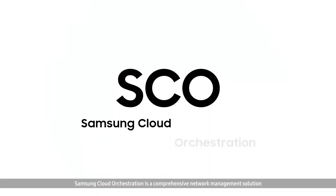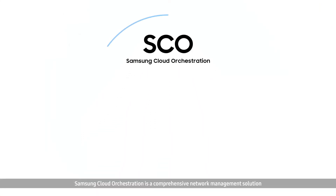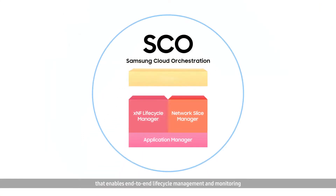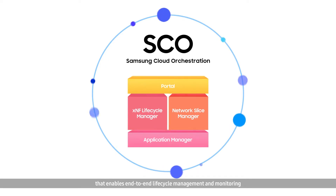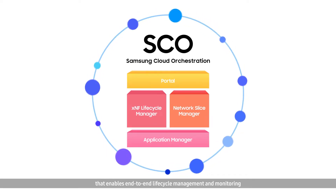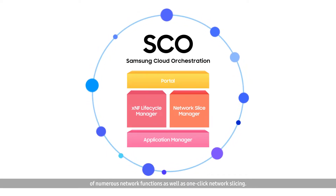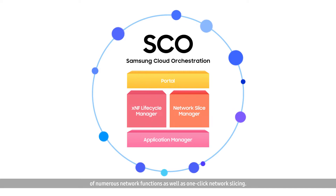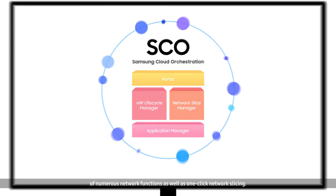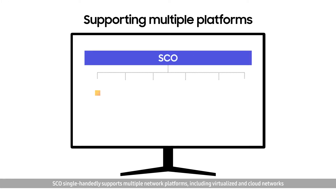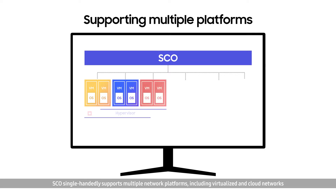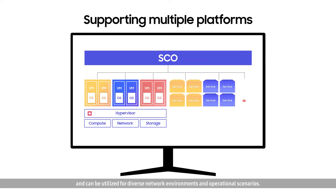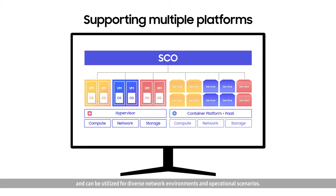Samsung Cloud Orchestration is a comprehensive network management solution that enables end-to-end lifecycle management and monitoring of numerous network functions, as well as one-click network slicing. SCO single-handedly supports multiple network platforms, including virtualized and cloud networks, and can be utilized for diverse network environments and operational scenarios.